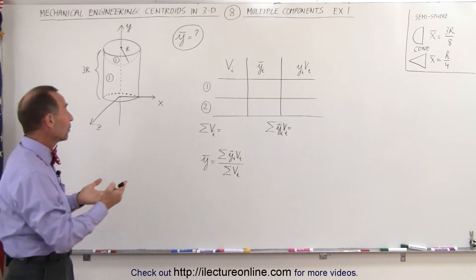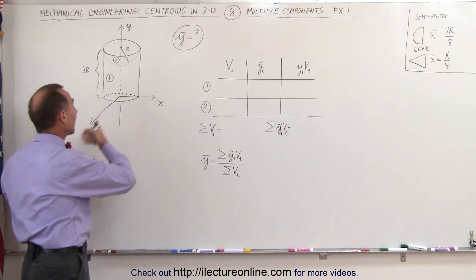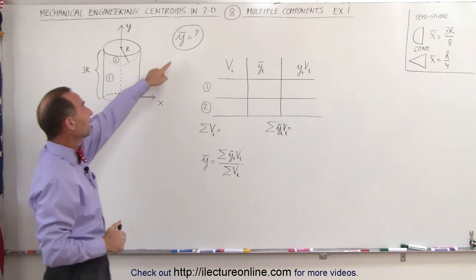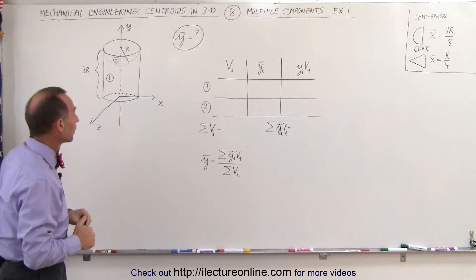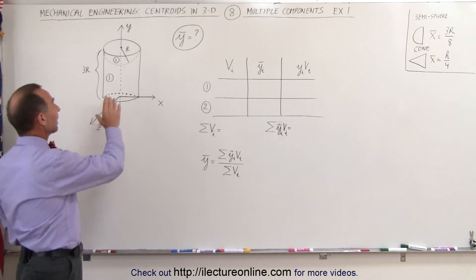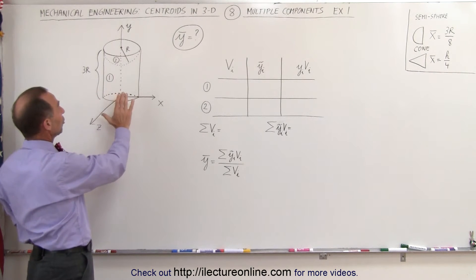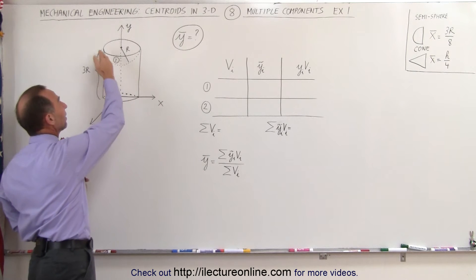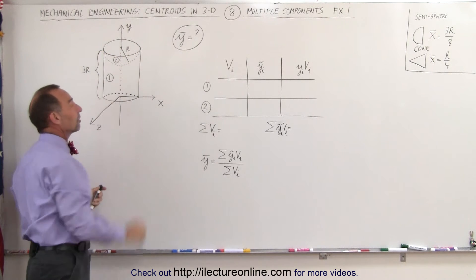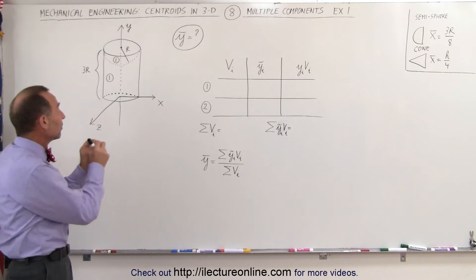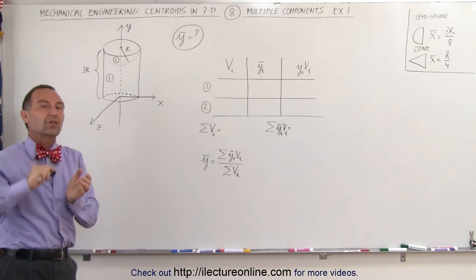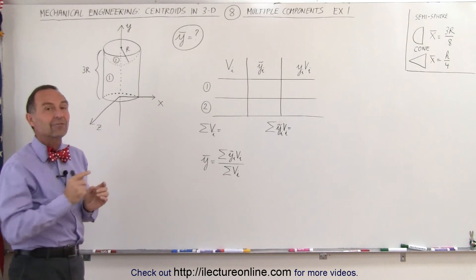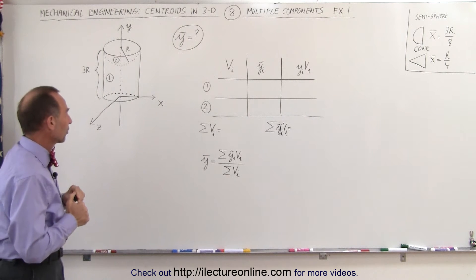In this case, we have perfect symmetry about the x-axis and the z-axis, but not according to the y-axis, so we're going to find the y-centroid of this object. We need to first subdivide it into familiar shapes. In one case, we have a cylinder — we'll call that shape number one. In the second case, we're going to have a semisphere — we'll call that shape number two. Notice that shape number two is actually hollowed out from shape number one, so we're going to call it having a negative volume.